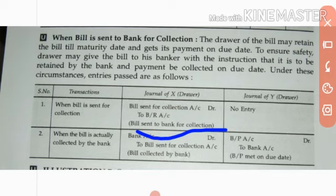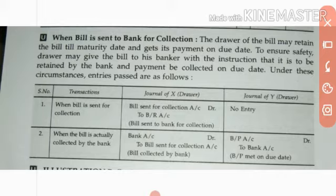When the bill is sent for collection, the narration reads: 'Bills sent to bank for collection.' So in this condition, we debit the Bills Sent for Collection account. The bills receivable is going out from us, so as per the rule 'credit what goes out,' Bills Receivable account is credited. Bills Sent for Collection account is debited because the bill is going to the bank.